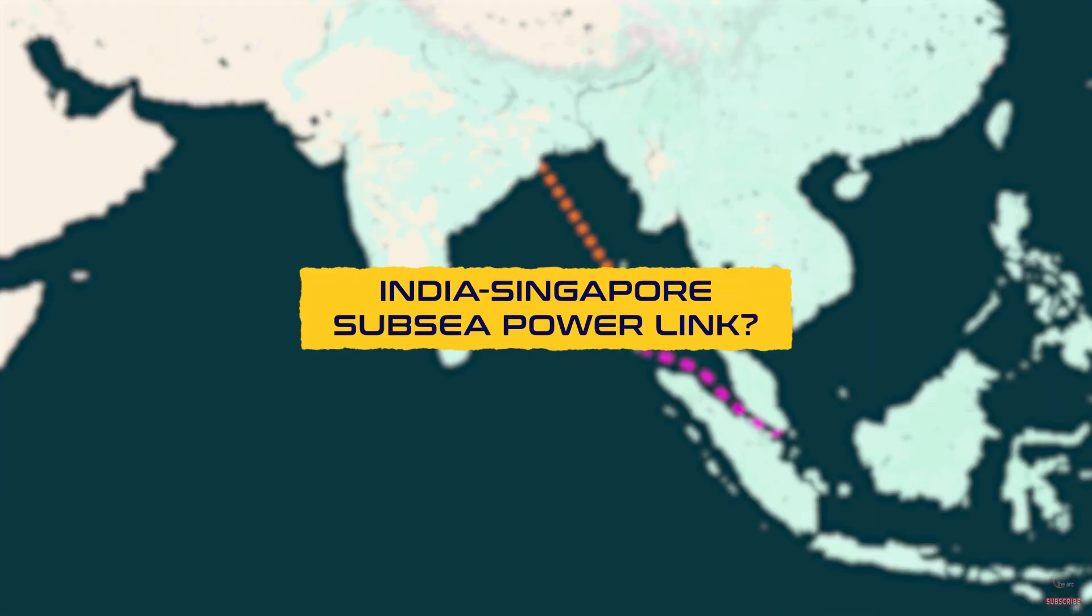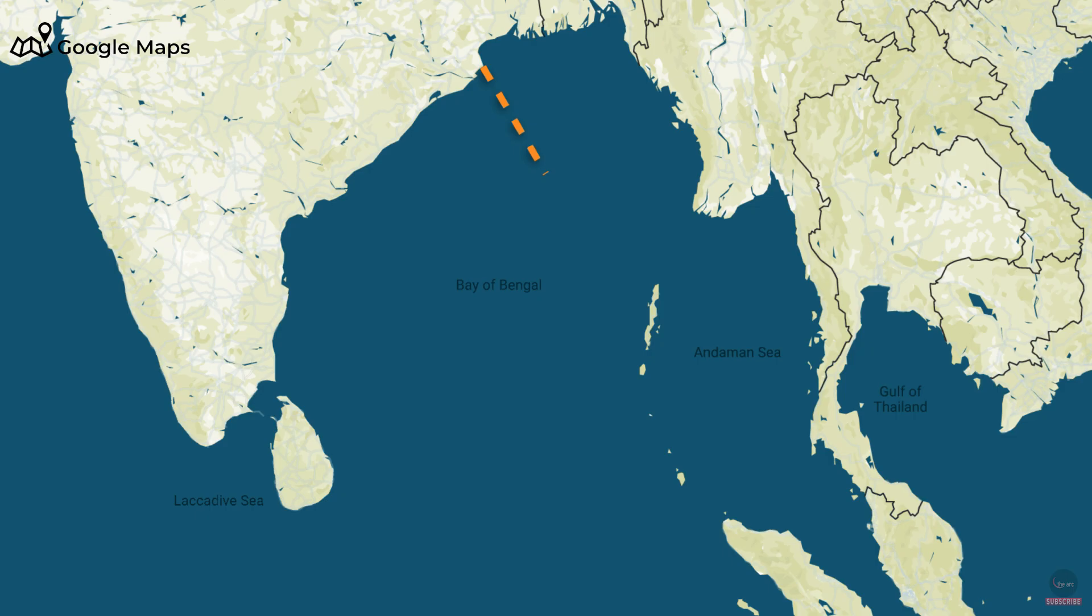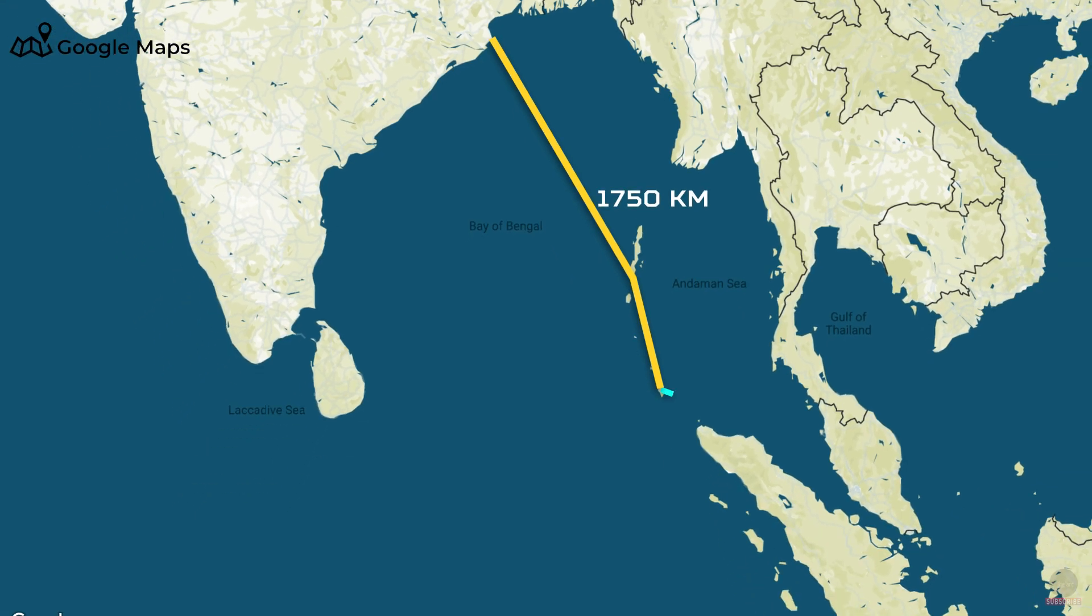Now, coming back to our discussion on the Paradip-Nicobar Island subsea power link, what's the logic behind extending the power link up to Singapore? As you can see, the distance between Paradip and Port Blair is approximately 1,150 km, and about 600 km more to Galathea Bay. So, as per the current plan, government will lay cable measuring 1,750 km. Now, can you guess the distance between the Nicobar Islands and Singapore? It is less than 1,300 km.